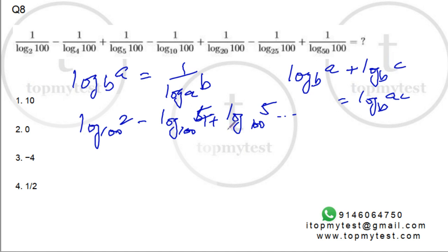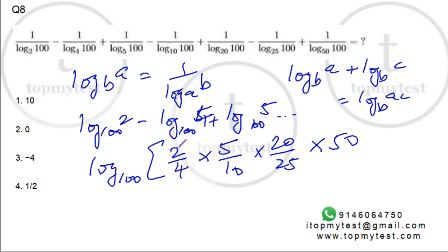So let's take one particular number. Your final number will be 2 divided by 4 into 5 divided by 10 into 20 divided by 25 into 50. This is half.